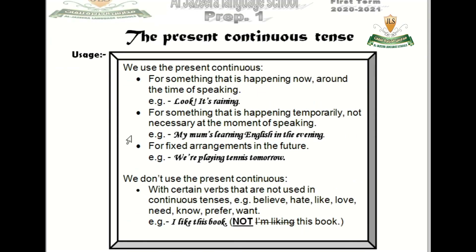The second tense is present continuous. Present continuous expresses something that is happening now or around the time of speaking — for example: look, it's raining. It is also used for something happening temporarily, not necessarily at the exact moment of speaking.